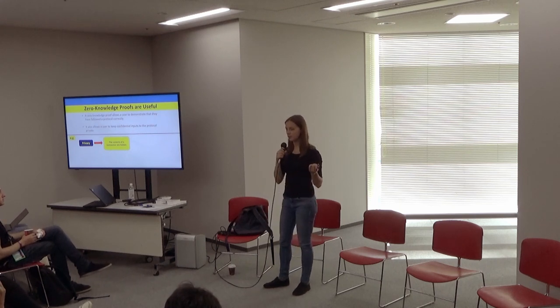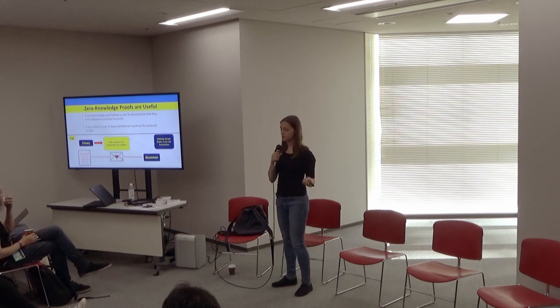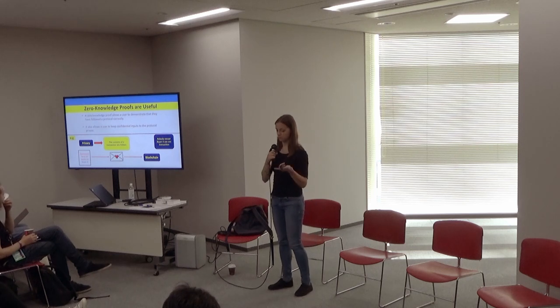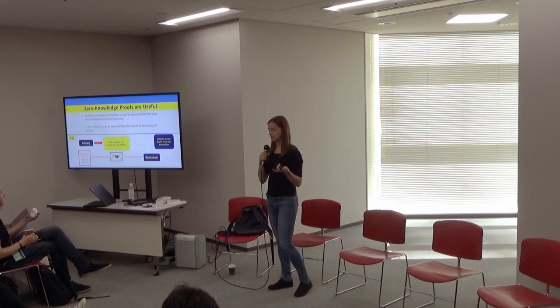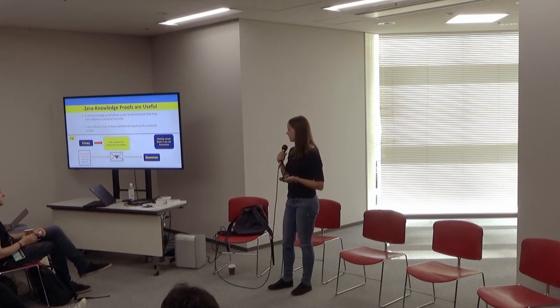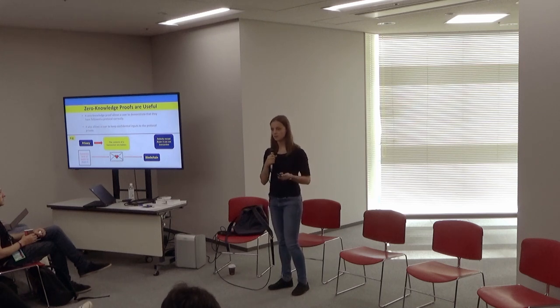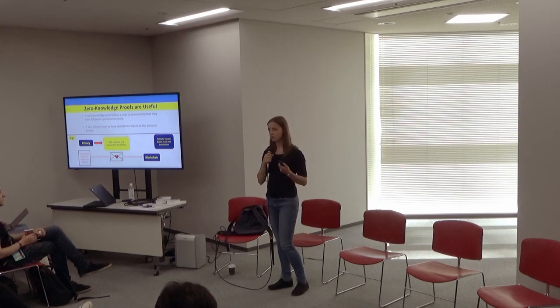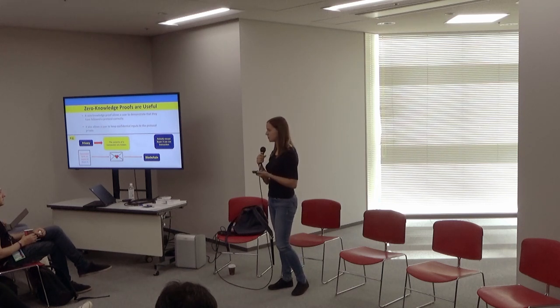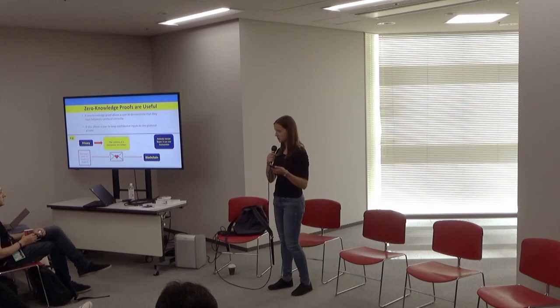The other nice thing that snarks allow you to do is achieve some level of privacy. So if you're wanting to hide the contents of a transaction — for example, suppose you have a buyer and a merchant, and the buyer wants to buy some produce but doesn't want you to know exactly what they're buying. In a business context, companies are unlikely to want to broadcast to their competitors precisely what they're buying every time they use a blockchain. So this is quite a realistic application.